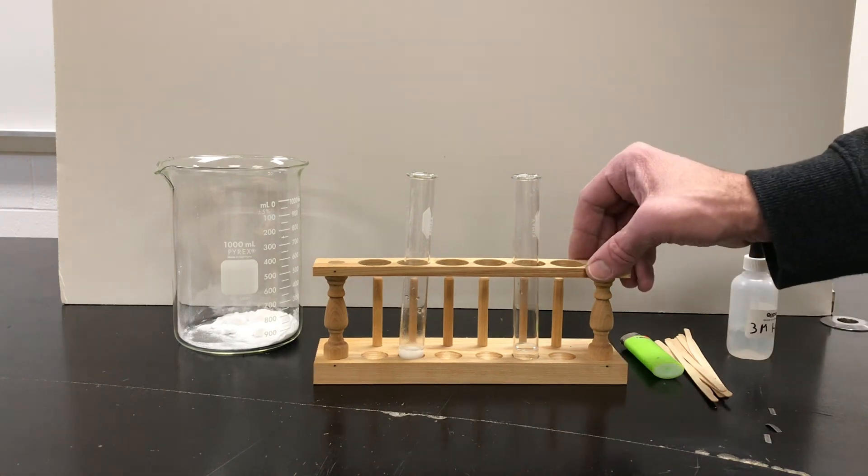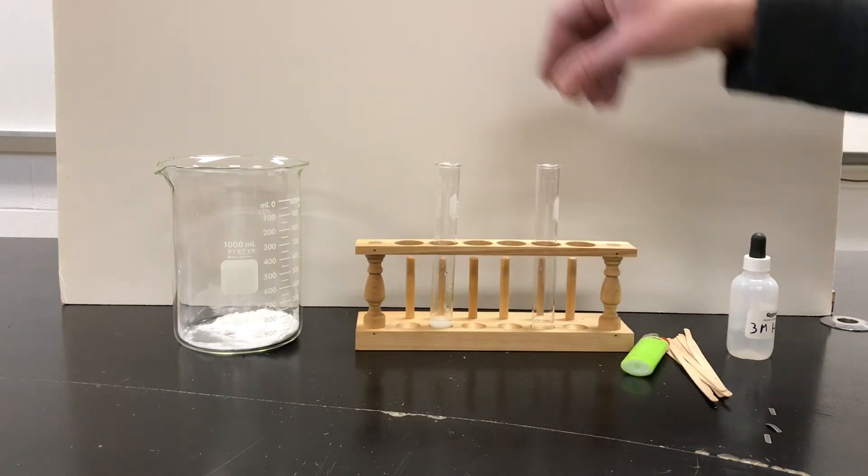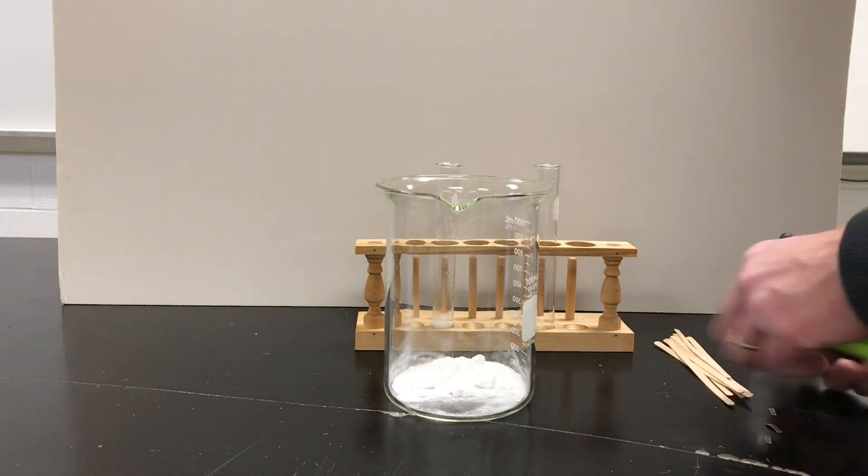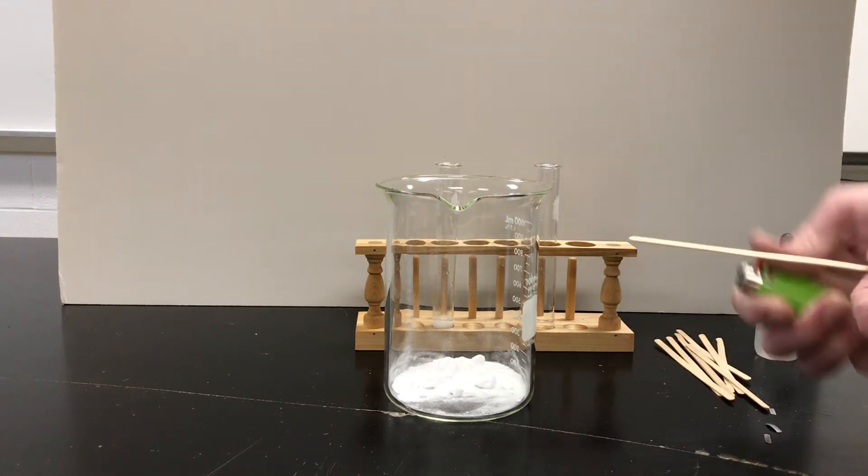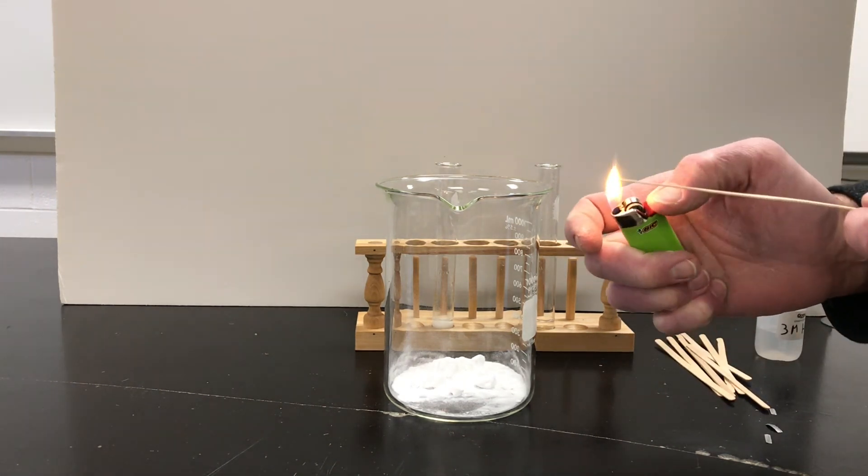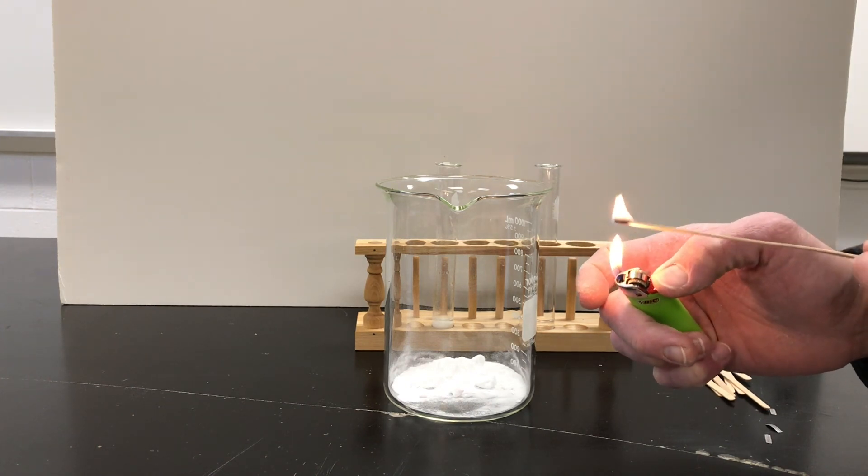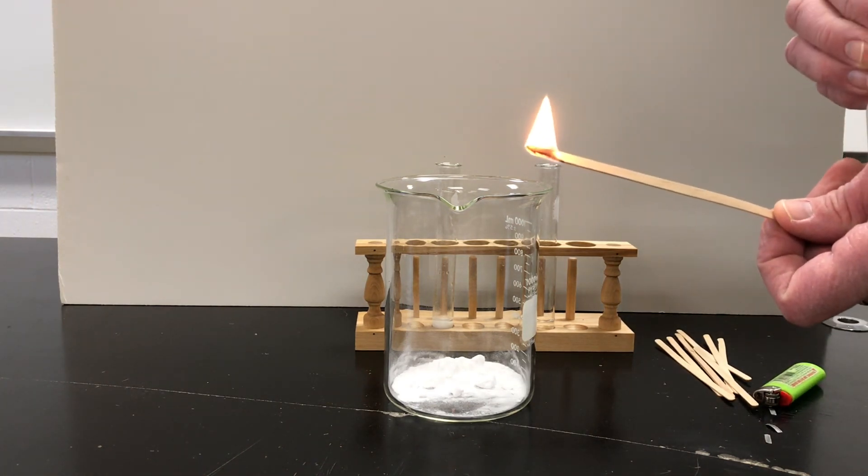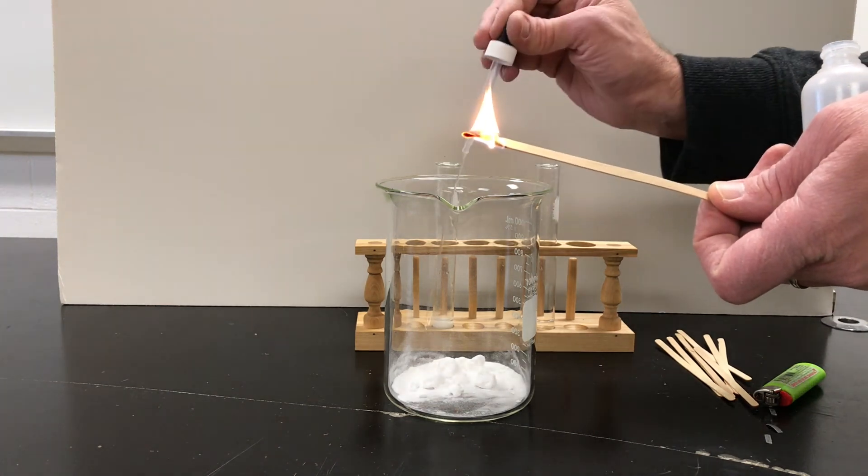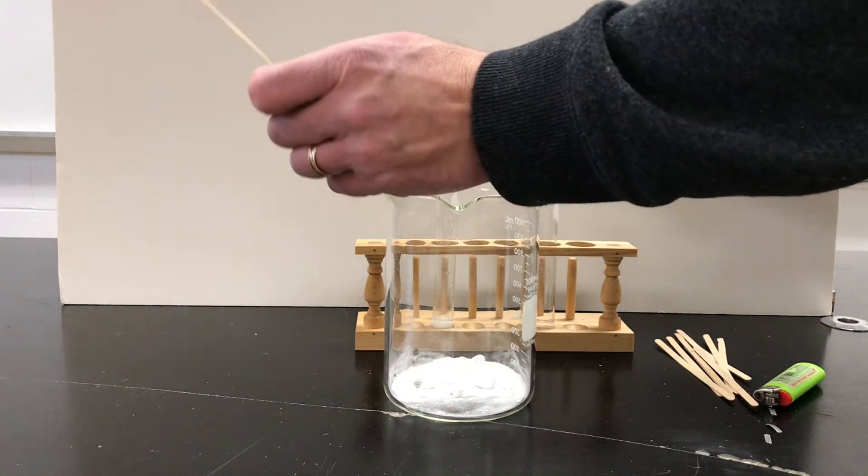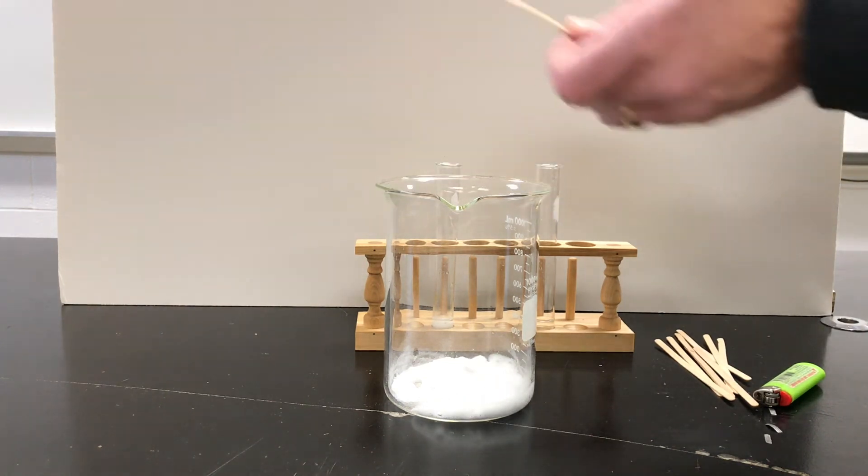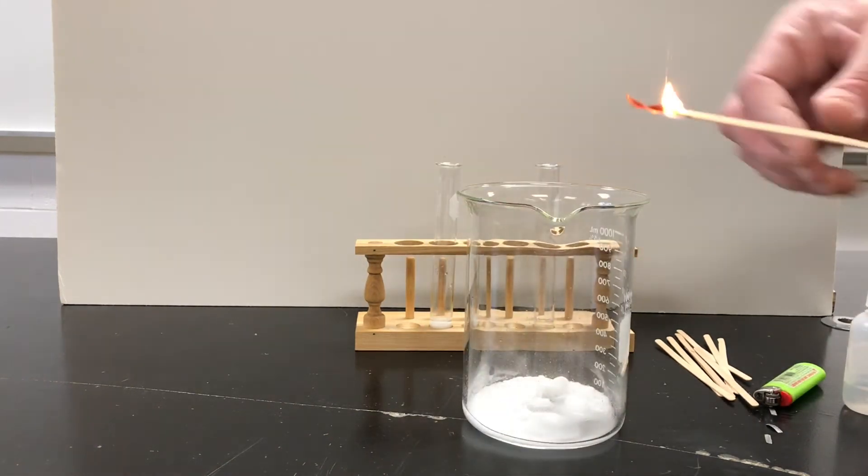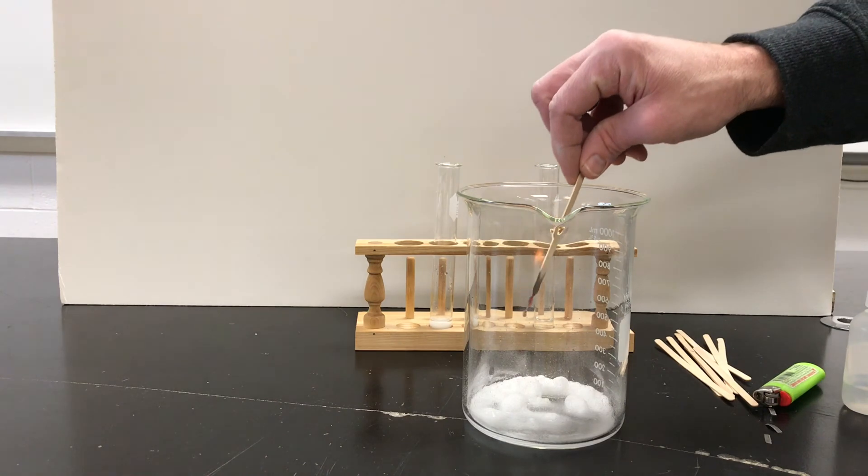The gas given off by the sodium bicarbonate we're going to use what we call a burning splint test. We're going to take a wooden coffee stirrer, light it on fire, and add acid to the baking soda. Dump it in there and it's going to make gas. Now this is a gas given off. If I take my burning splint and put it into the beaker, notice it goes out.